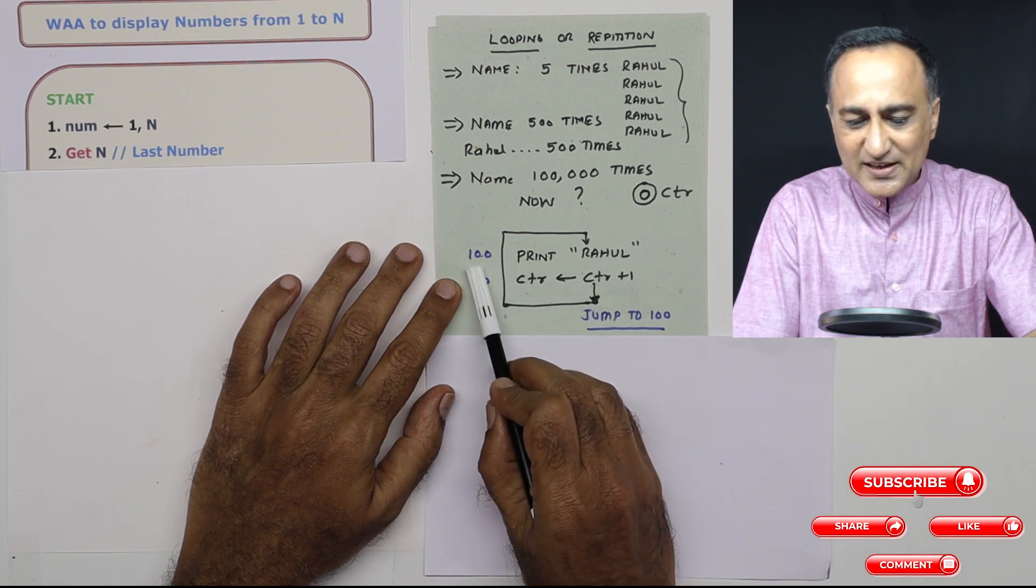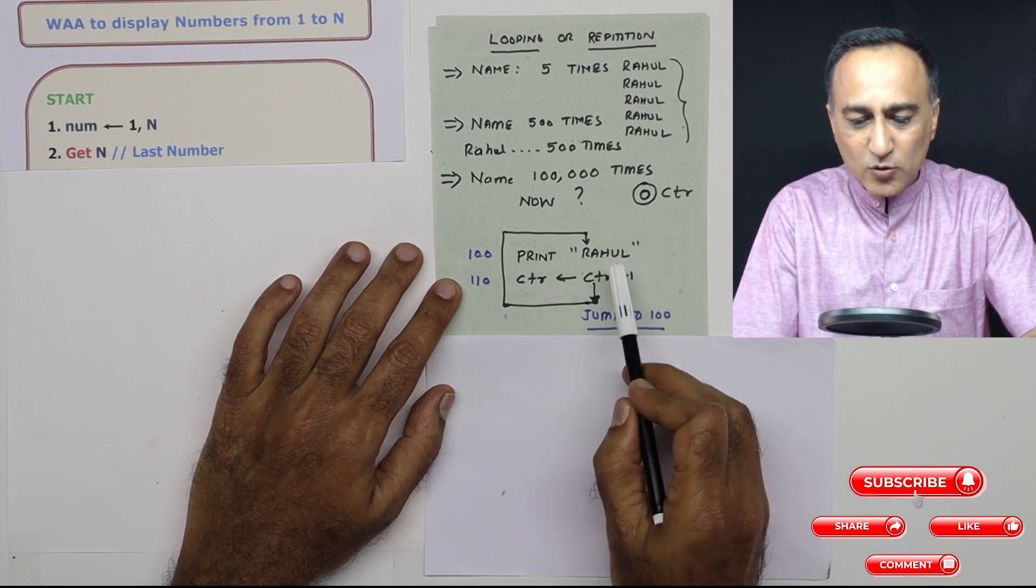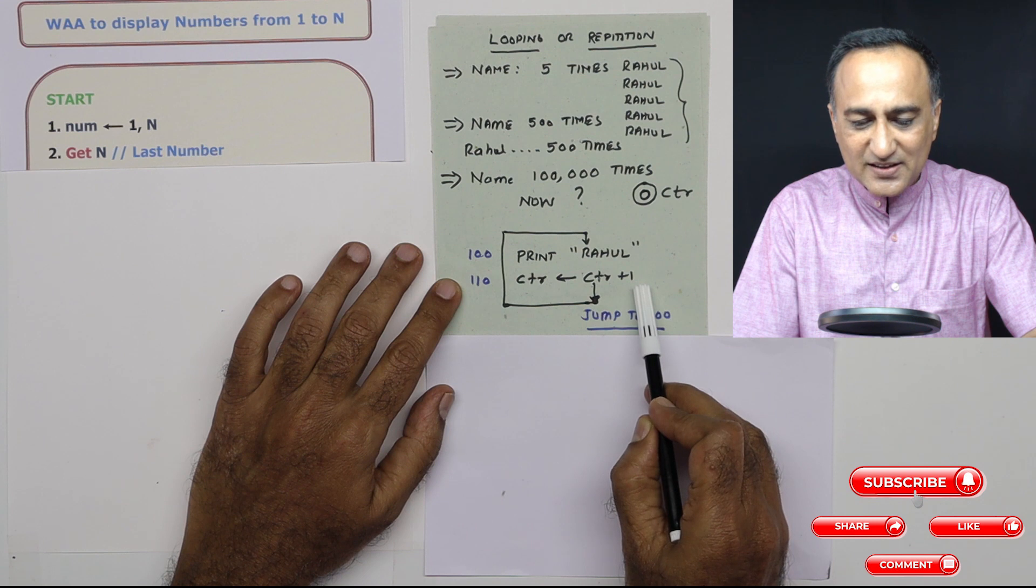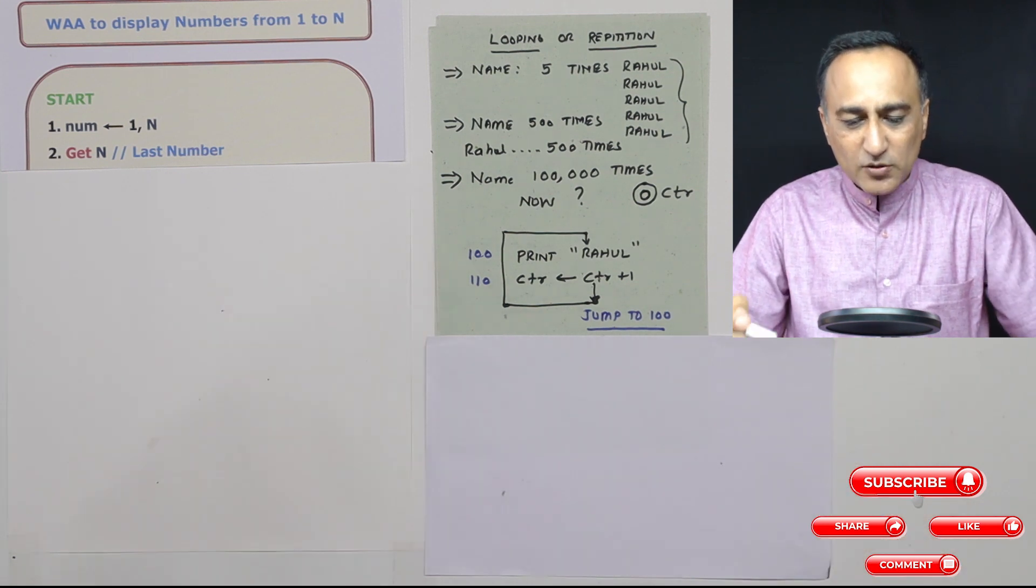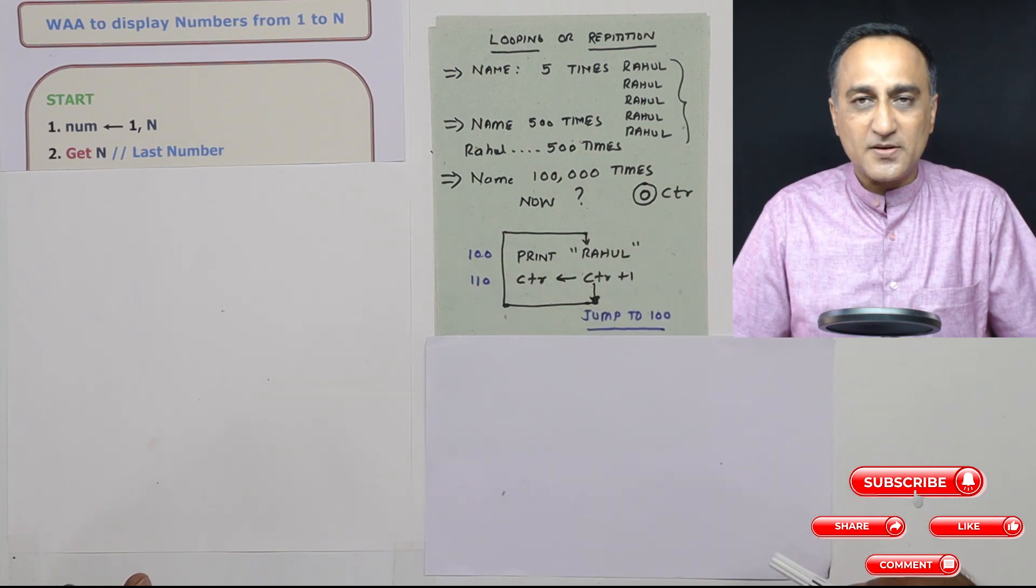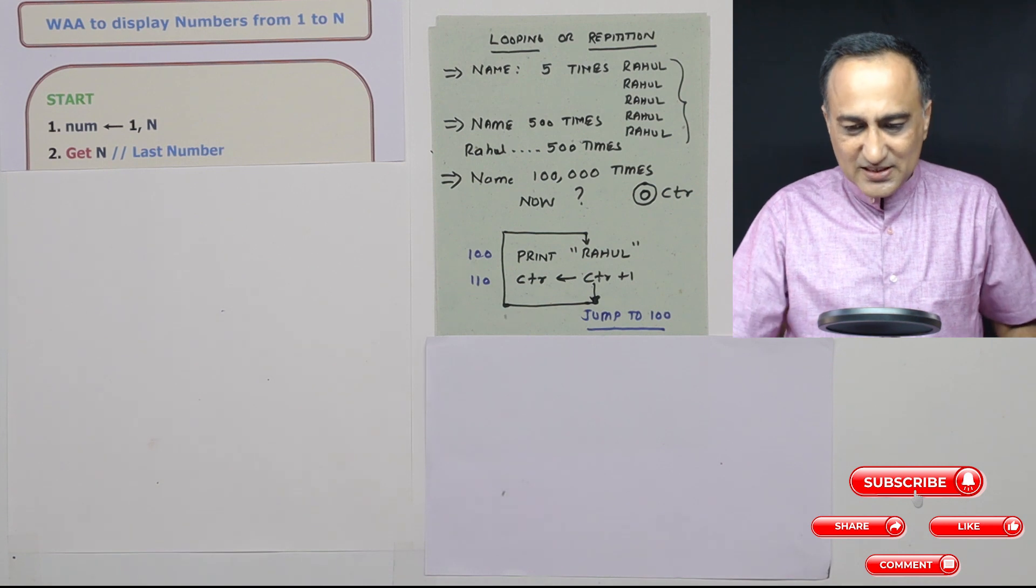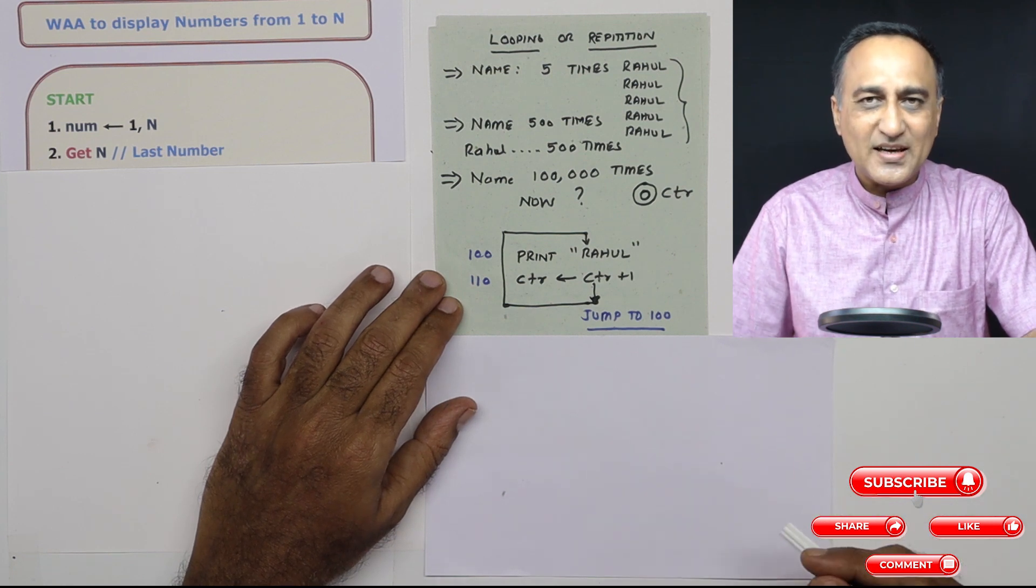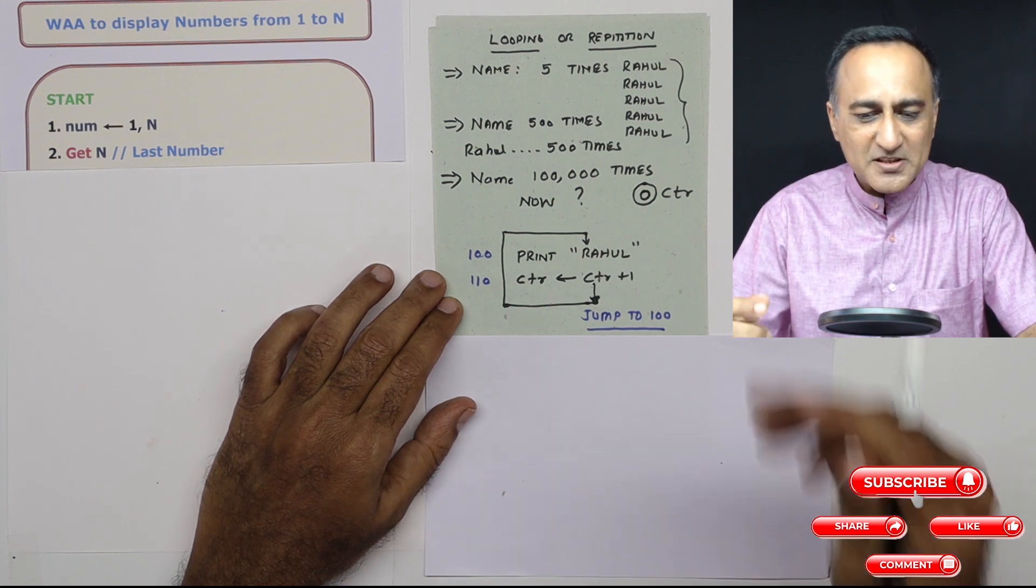So what I will do is on the first line, starting at address 100, I am going to print Rahul. Then on address 110, I am going to increase the count by how many times I have printed Rahul. Once I finish this 110th address line, I jump back and keep executing this printing this Rahul message. Now there is only one problem with this particular loop or repetition. It is going to print Rahul forever till time ends or till the power supply of the computer goes on. Such kind of tasks are not really very useful in real life. Most of the tasks require it to be done a specific or a fixed number of times.